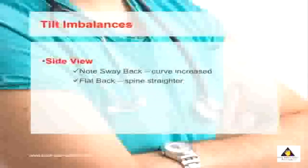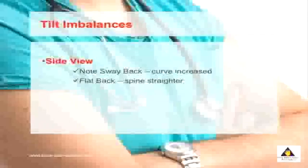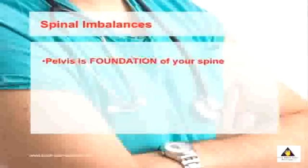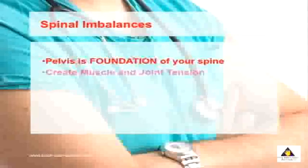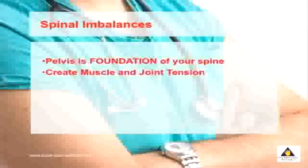You can also look at the side view of your posture, which detects what's called a tilt type imbalance, where you can have a sway back where the curve in your low back is a lot greater, or you may have a flattened spine. The pelvis is the foundation of your spine, and imbalances centered around here can create pain throughout your spine, causing both muscle as well as joint tension.